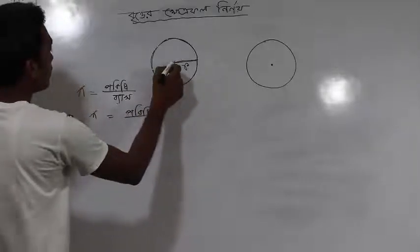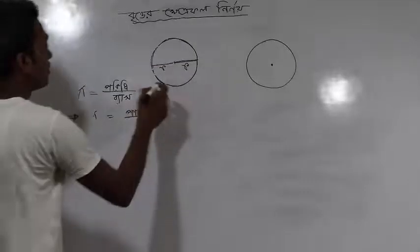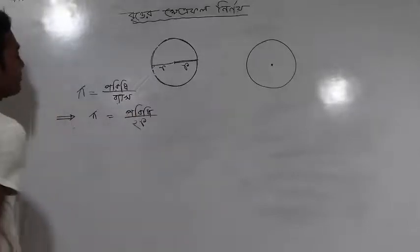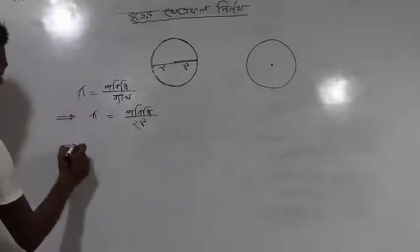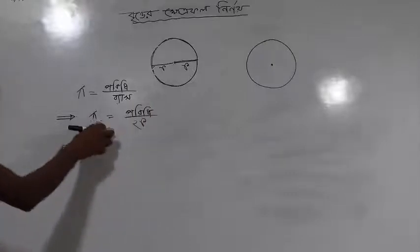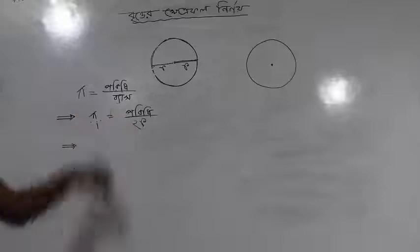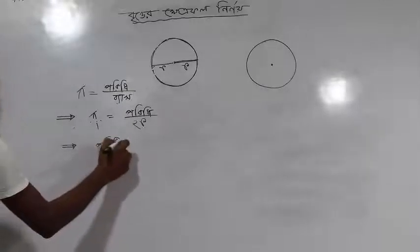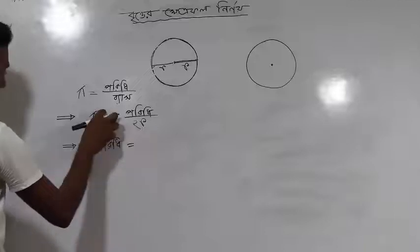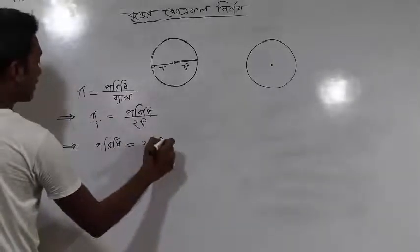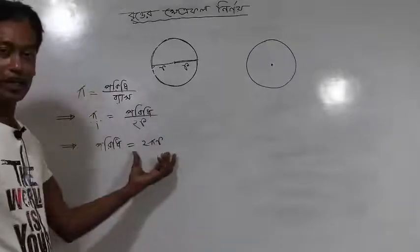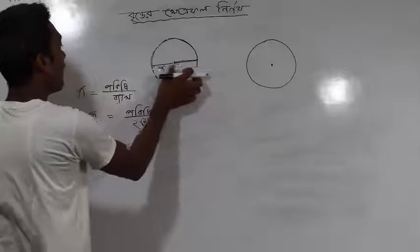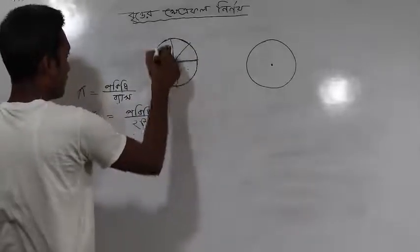આ ચা બ્યાસ આર્ડ — the diameter and the circumference (পরিধি) are discussed here. The perimeter (পরিধি) is 2πr, and now we will do our work.